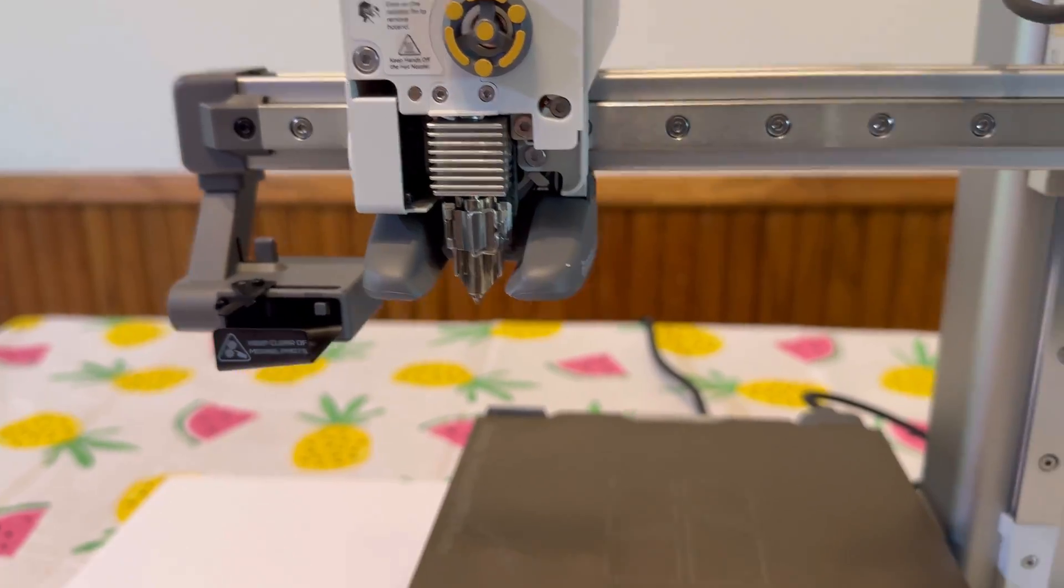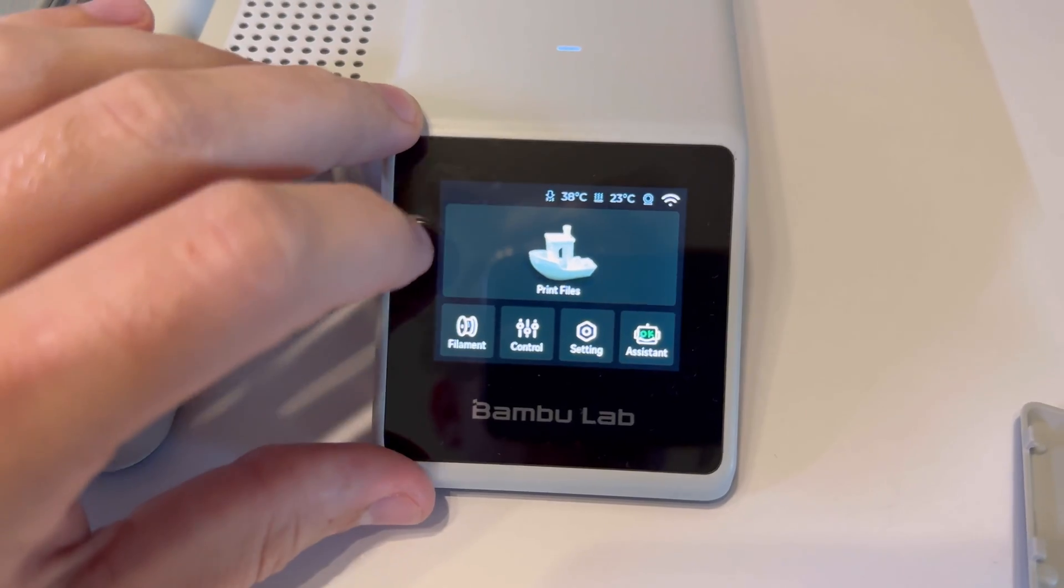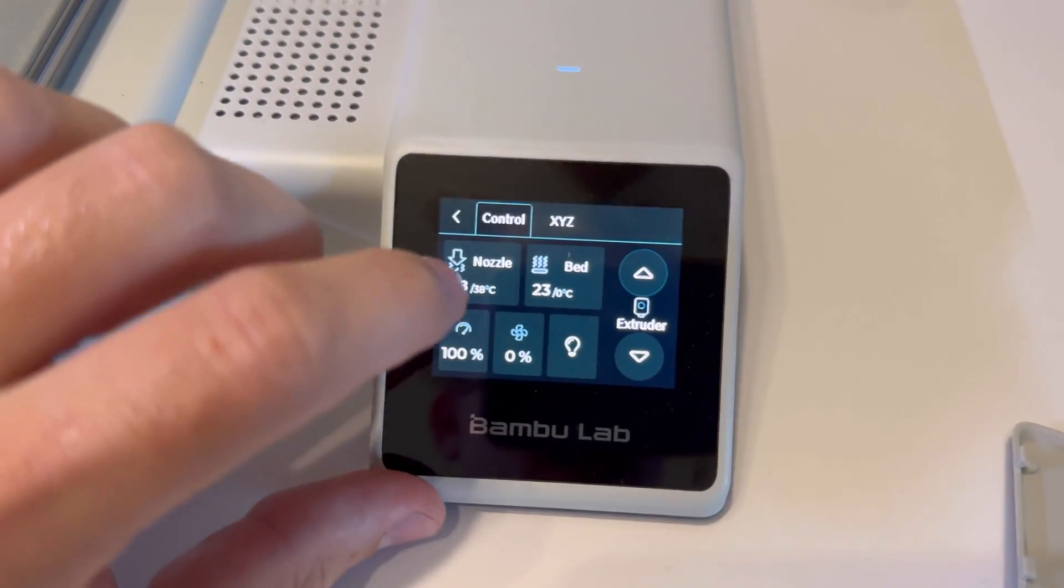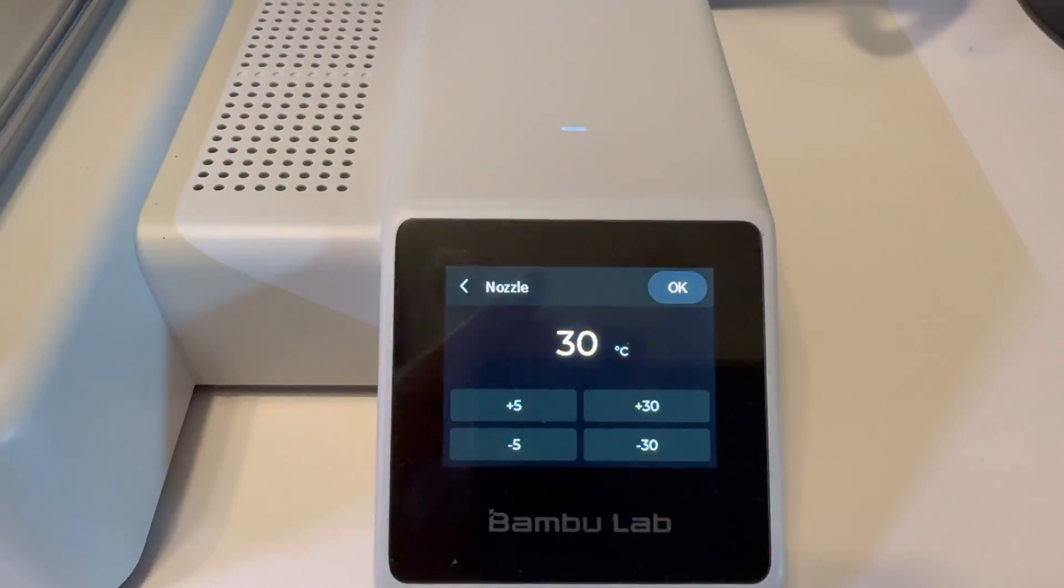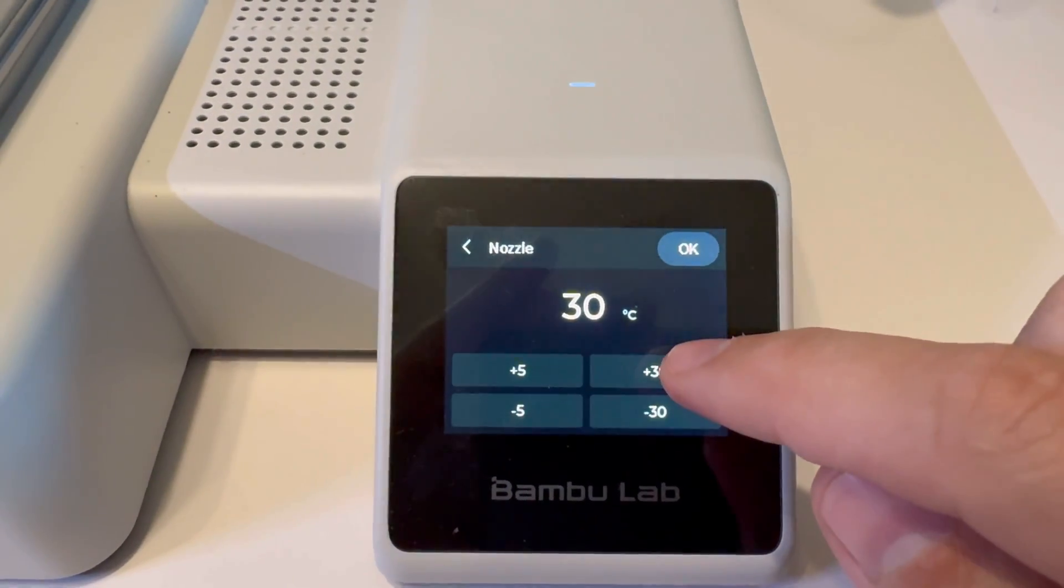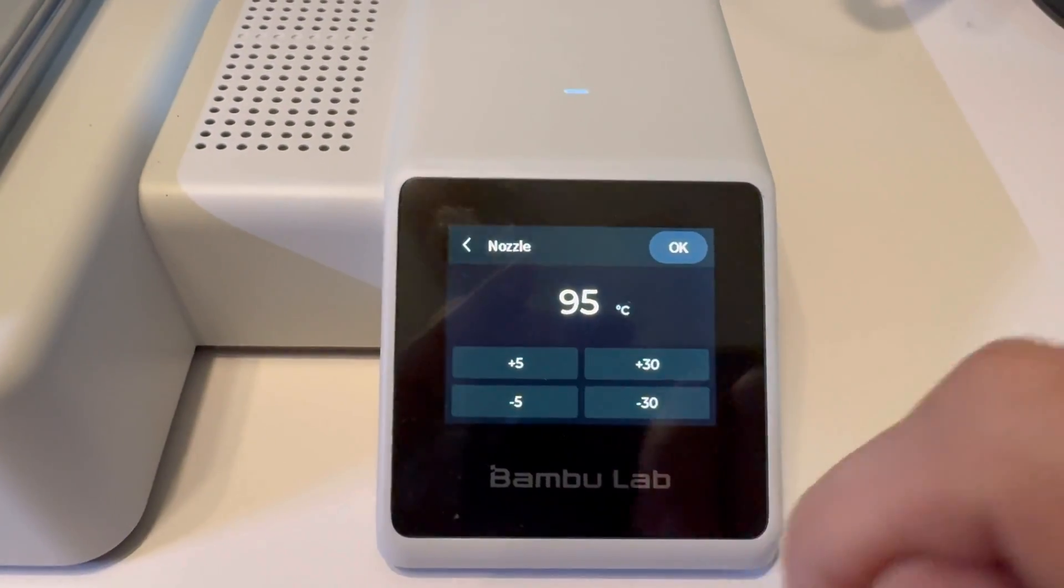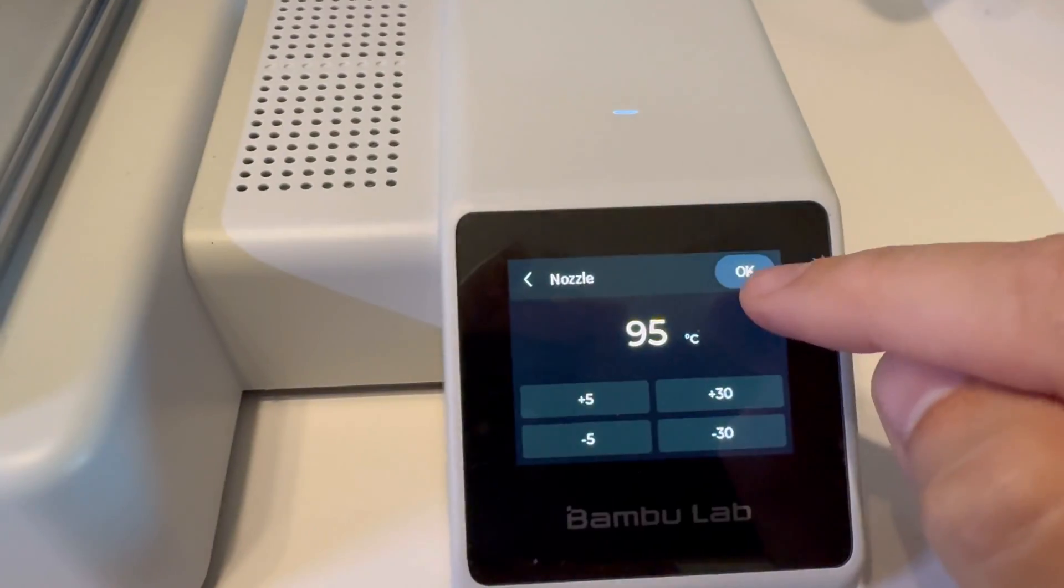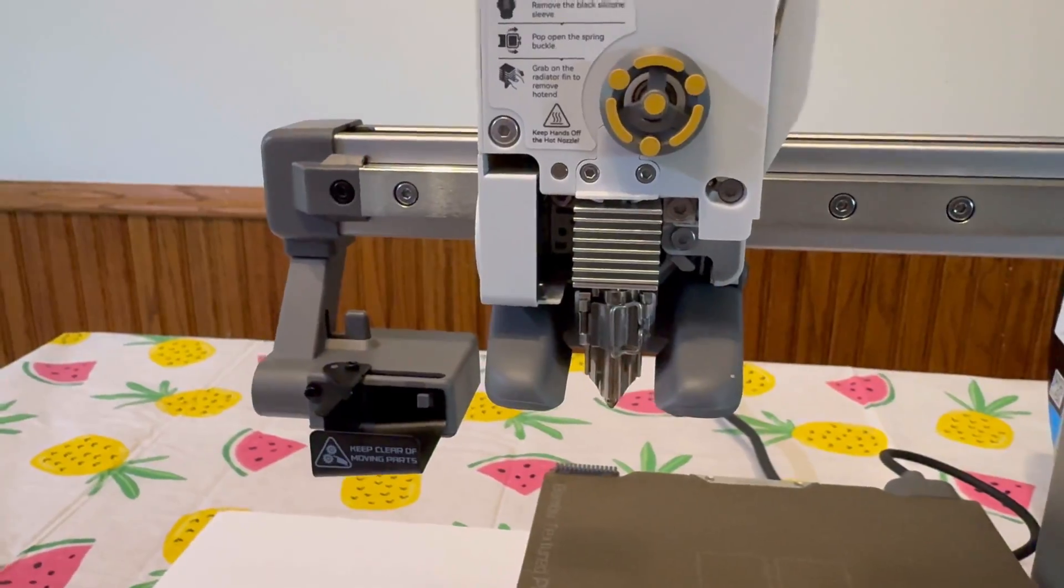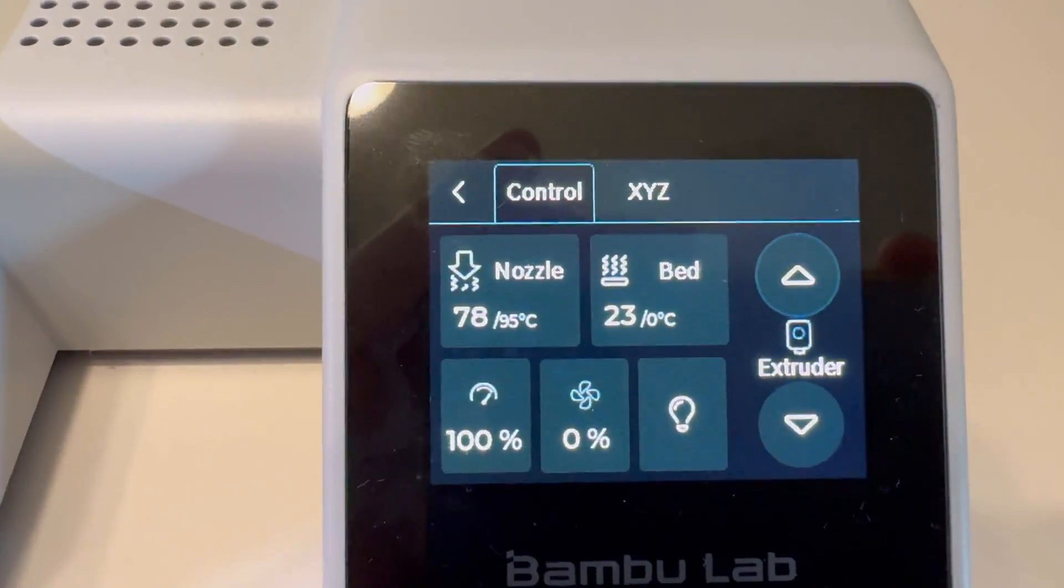So get this off. Next, what we want to do is go back over to our display here. Click back to the main screen here. Then click Control, and then click on Nozzle. We want to turn this nozzle up to about 200 degrees Fahrenheit. So we're going to click on plus 30. I think we want around 90 degrees Celsius. Let's do 95. That's about 200 degrees Fahrenheit. Then click OK in the upper right-hand corner. You will hear your printer start to heat up, and you can see the temperature right there. And this is what's known as a cold pull.